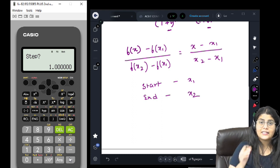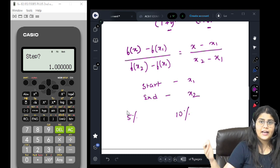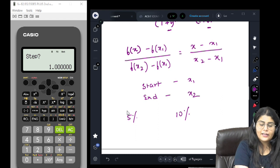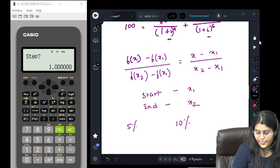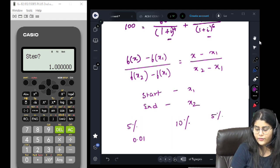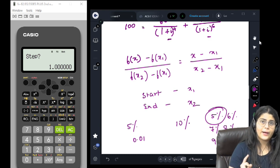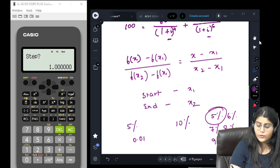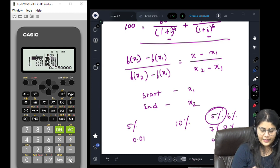Step: what is step? Step will tell me between 5% and 10%, how many calculations or at what intervals do I want my calculator to show me answers. If I give a step of 0.01, which means 1%, then the calculator will show me answers for 5%, 6%, 7%, 8%, 9%, and 10%. From my start value to my end value, at every 1% gap, it will show me the value this expression will take. Let's put the step as 0.01. Then I press equal to.